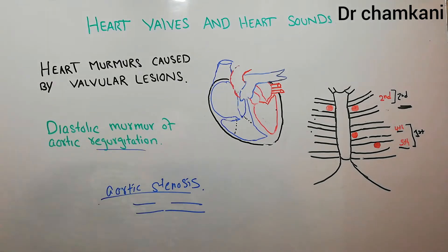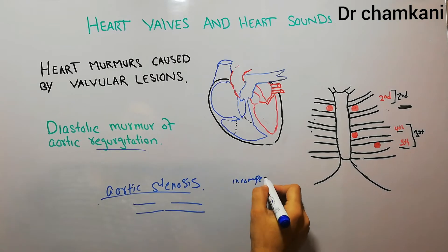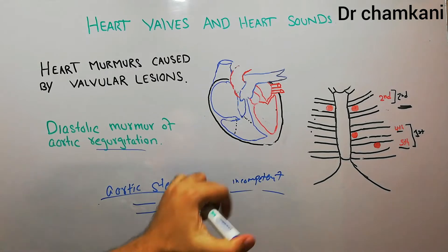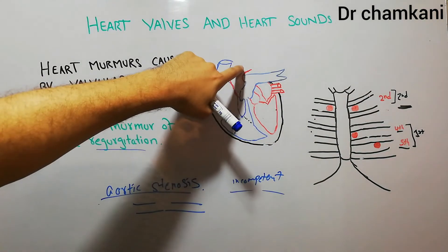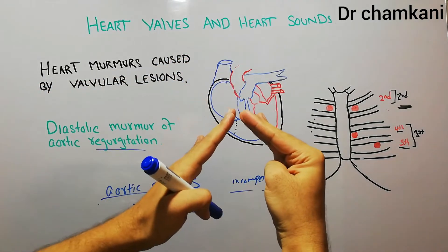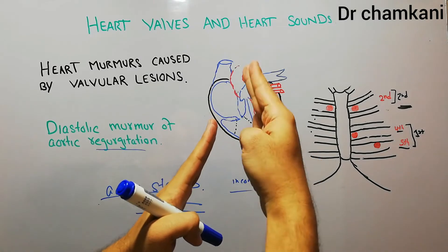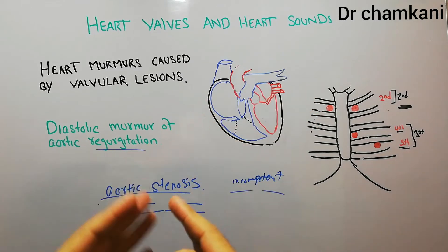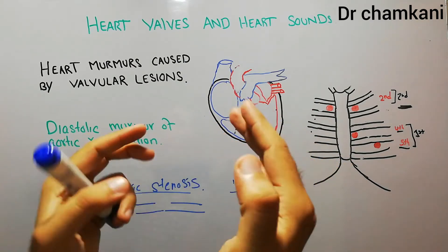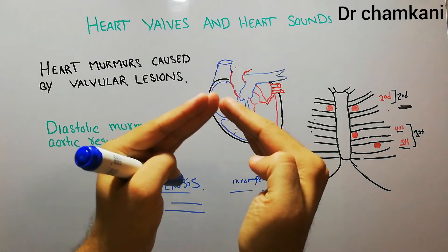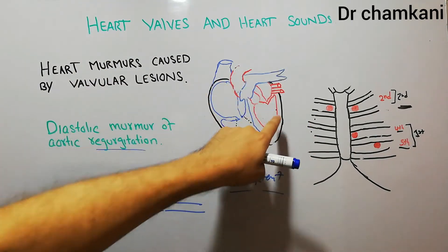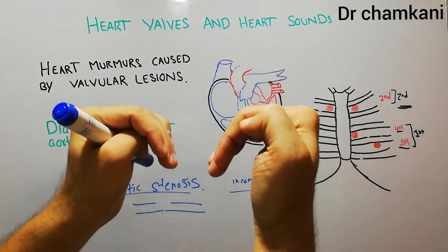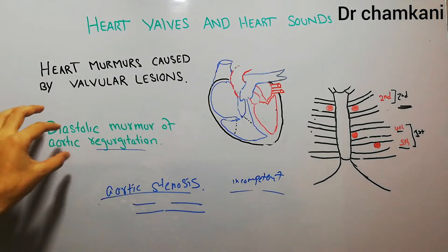In diastole, what happens is that the valve becomes incompetent. Incompetence means that normally the aortic valve should allow blood to move from the left ventricle into the aorta, but it should not allow blood to move back from the aorta into the left ventricle. The aortic valve should allow blood to move to the aorta in systole, but will close when blood is coming back. When aortic regurgitation occurs due to incompetence of the valve, the valve cannot stop the movement of blood from the aorta into the left ventricle and blood starts moving back. This is known as aortic regurgitation.